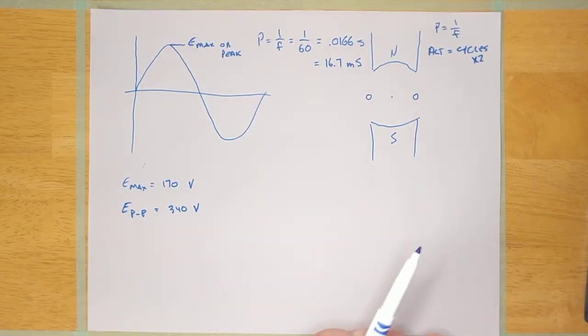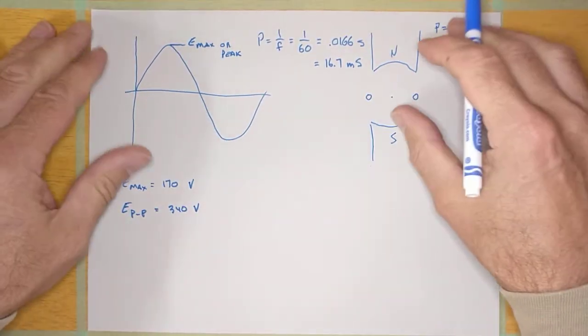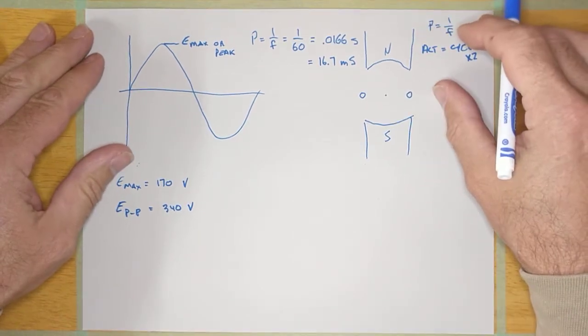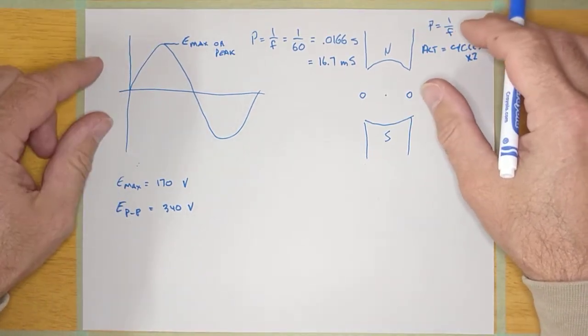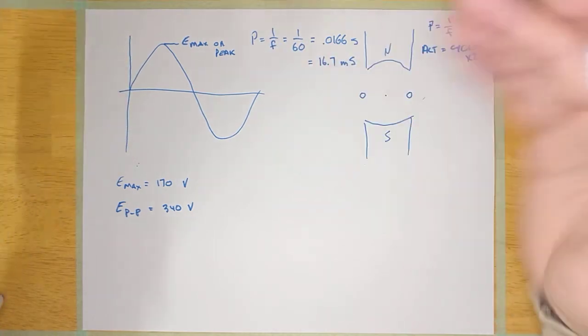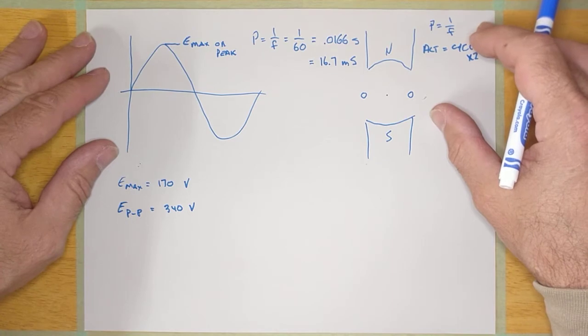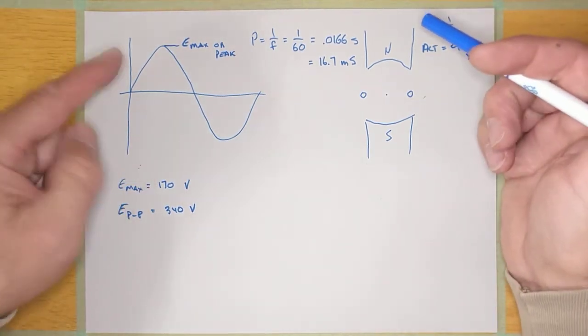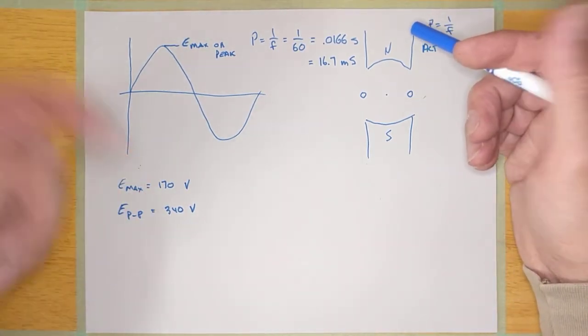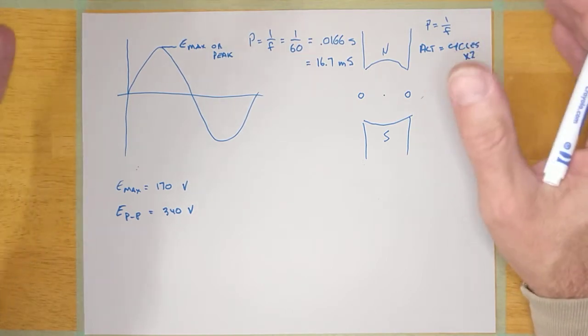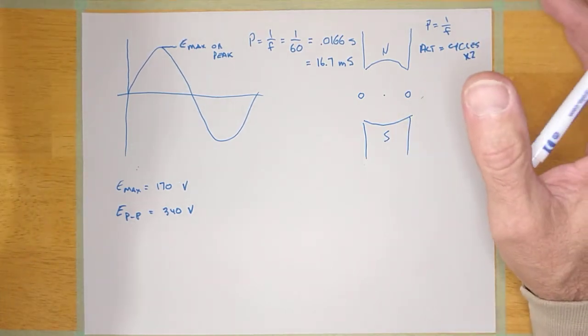Now, there's a couple other things that I want to talk about, and that is this. If I was looking at this voltage on a scope and I noticed that the peak voltage was 170, what if I measured this particular voltage with a digital multimeter set on AC? What would it say? Would it say 170? Would it say 340? Or would it say something completely different?